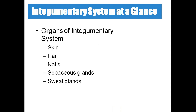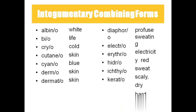Coming to the organs of the integumentary system: skin, hair, nails, sebaceous glands, and sweat glands. All these things are present in the integumentary system.